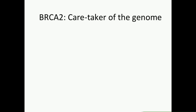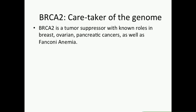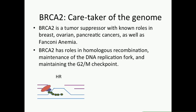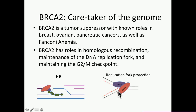BRCA2 is known as the caretaker of the genome. It's a tumor suppressor with known roles in breast, ovarian, and pancreatic cancers, as well as in Fanconi anemia, which is a condition from a series of genes that result in developmental abnormalities, bone marrow failure, anemia, leukemia, and later in life, solid tumor formation. BRCA2 has roles in homologous recombination, where it's involved in the localization of the RAD51 filament to allow for invasion into the DNA template to repair double-strand breaks, as well as DNA replication fork protection so that when replication forks are stalled there is no chew back of the nascent DNA.